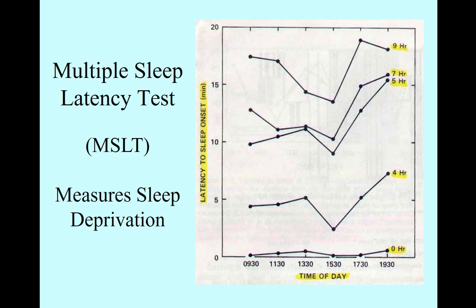So, let's look at the x-axis. This is time of day. 9:30 in the morning, 11:30, 1:30, 3:30, and so on. 5:30, 7:30 at night. Okay?